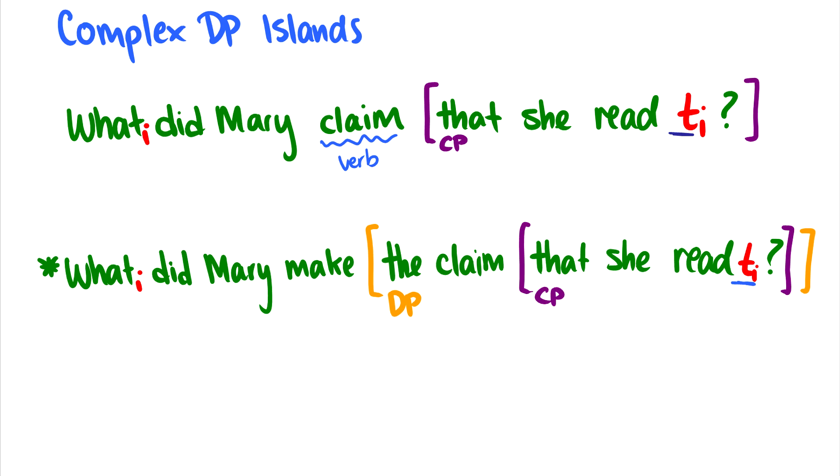...is that we can't move wh-words out of CPs that are inside of DPs. So here in the first sentence we see a CP just on its own. We can move out of the CP freely because this can move into the spec CP position and then do cyclic movement up. However, for this sentence, what did Mary make the claim that she read, we can move to spec CP pretty easily, but then if we want to move further, we have another phase here. We have this DP that's blocking further movement outside. So we can't take this wh-word and move it up to the top of the embedded clause because this is deeply embedded inside of a DP. So there's a CP inside of a DP, and when we have this, we cannot move our wh-words out of it, creating a complex DP island.